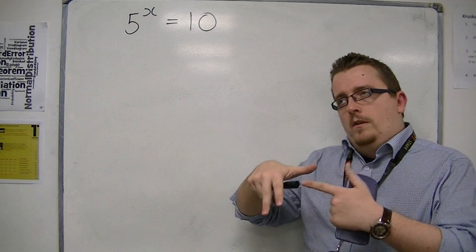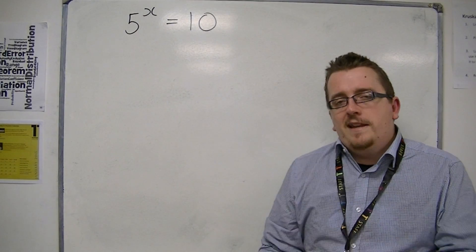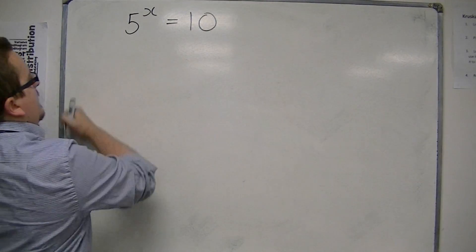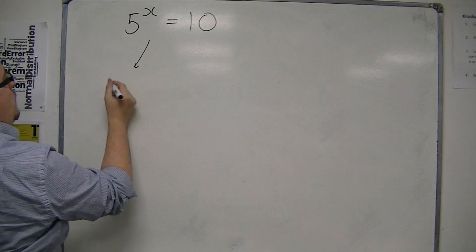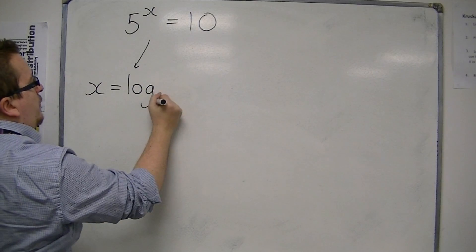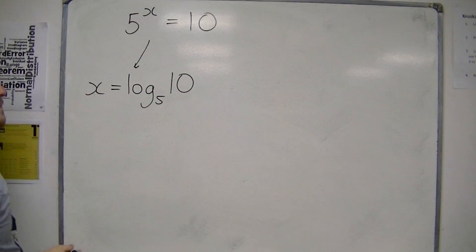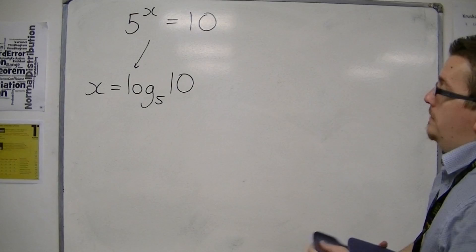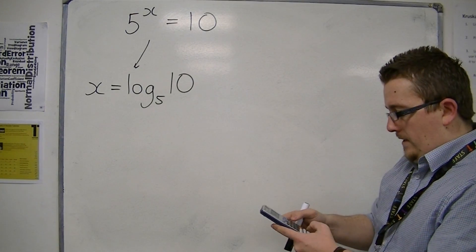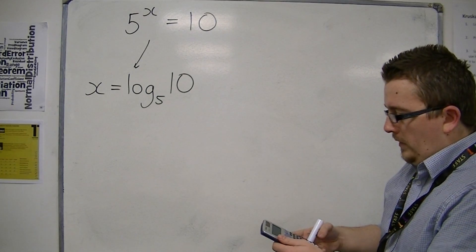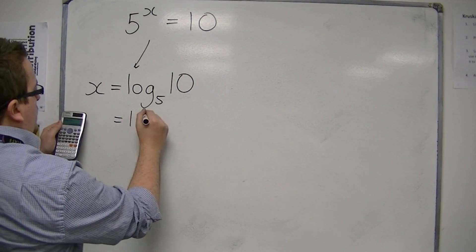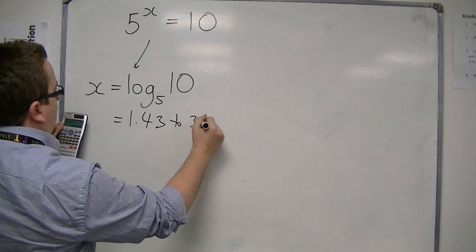Because now that we know how to convert from index form into logarithmic form, you can immediately go into saying, well then x must be equal to log base 5 of 10. And that will give me a solution. So I can type that immediately onto my calculator. So x is equal to 1.43, to three significant figures.